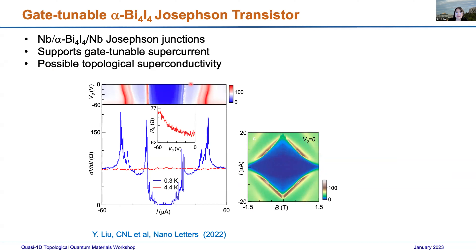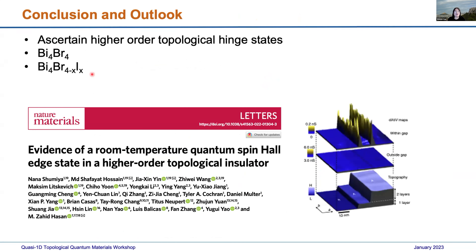This shows we have a gate-tunable supercurrent that could possibly support topological superconductivity. For future work, we want to ascertain the higher-order topological hinge state in bismuth iodide and bismuth bromide samples. We've also heard that the ternary compound bismuth bromide iodide could be very interesting, and there's ongoing STM study on topological hinge states at step edges of bismuth bromide. We're working towards transport measurements on those systems.